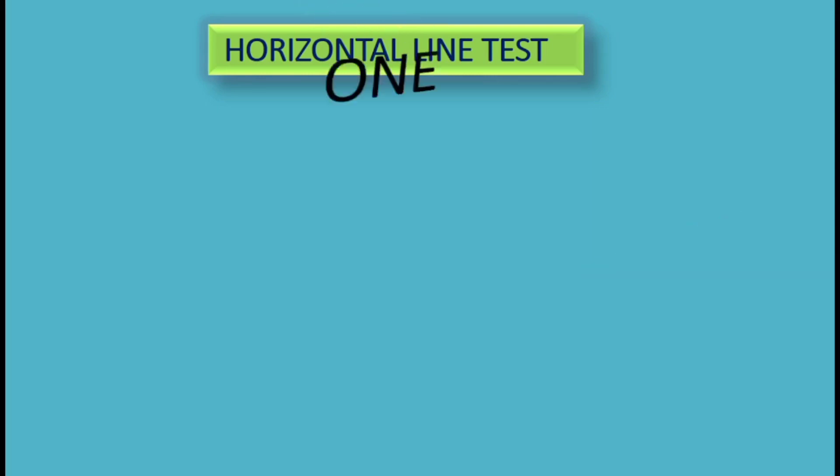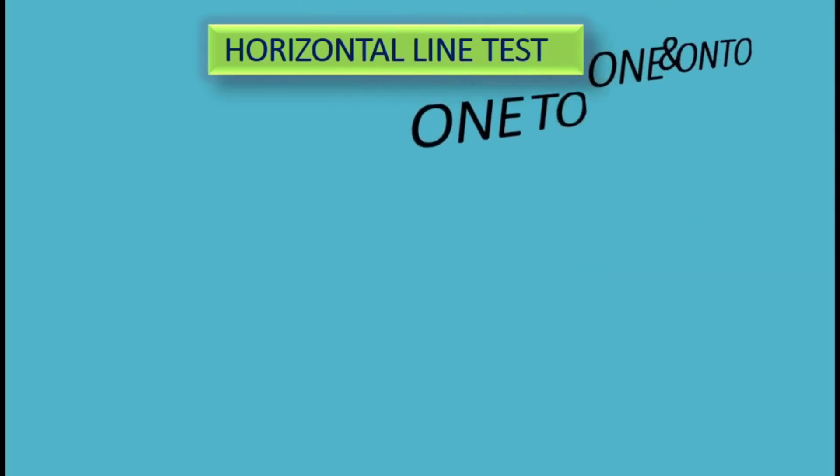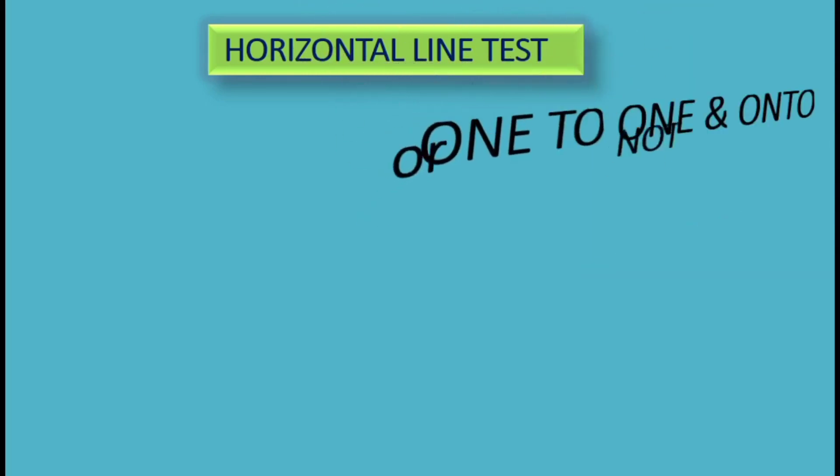Hi viewers, this is Johnson. In this video, we will look at the horizontal line test — what it is used for and how to apply it. Using the horizontal line test on a graph, we can check whether a function is one-to-one.